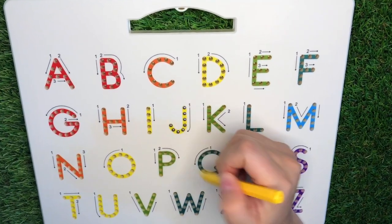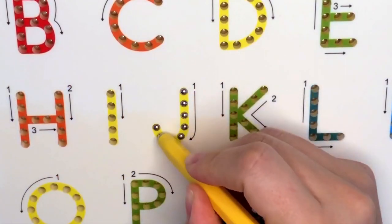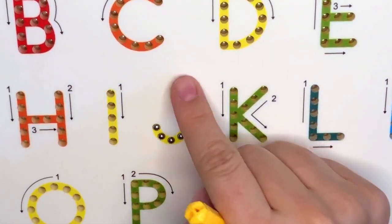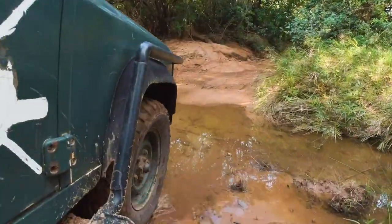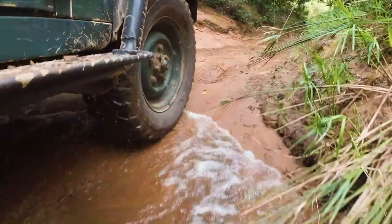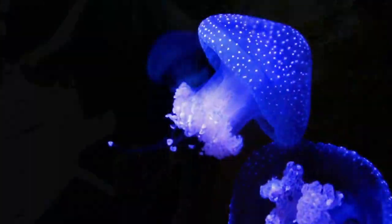Next letter, J. Pull down and curve. J is for jeep, jellyfish, and jet.